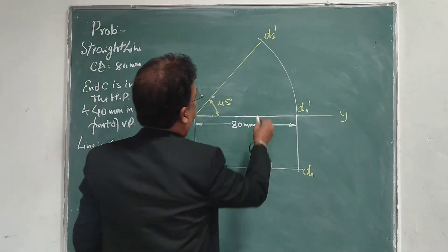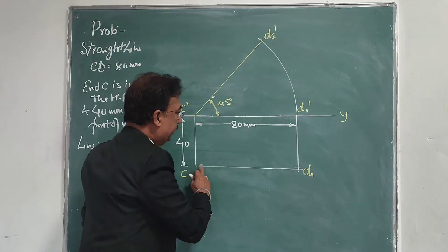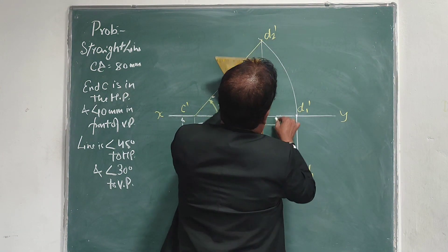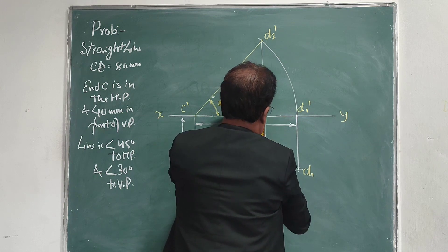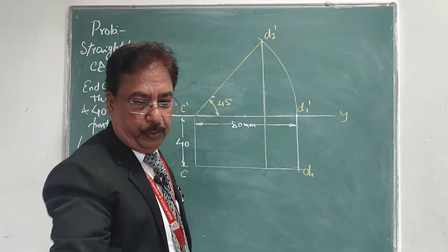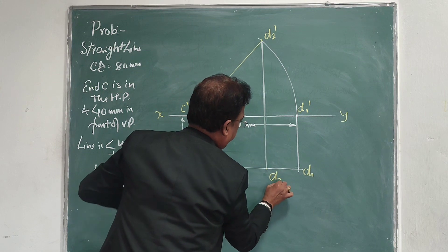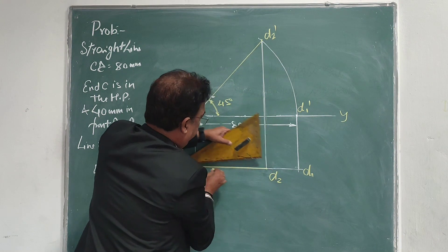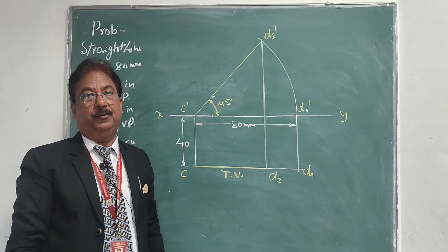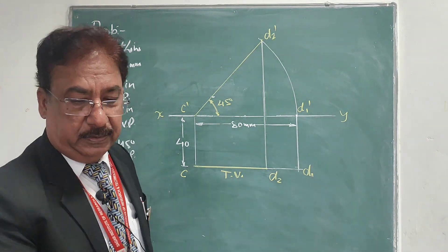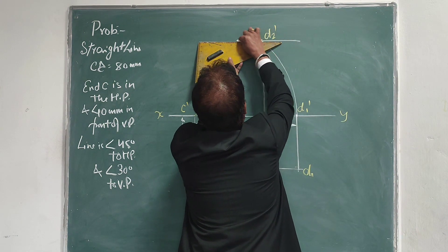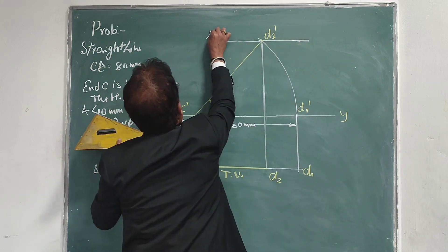This line D2-dash is 45 degrees inclined to the HP and still parallel to the VP. To draw its top view, I draw a perpendicular from D2-dash onto the line CD1. Since the line is still parallel to the VP, from this point I drop a perpendicular to cut the top view — that is point D2. We get the top view CD2, and as you know this top view will be the final top view. If I draw a parallel line from D2-dash, this will be the locus of our final point D-dash.